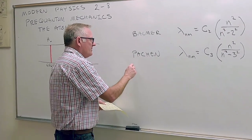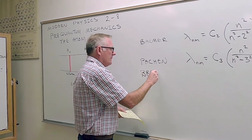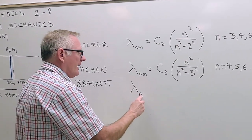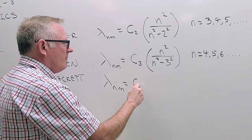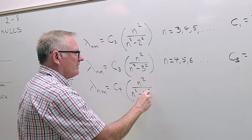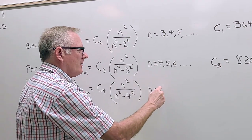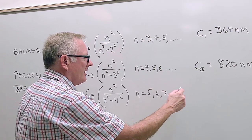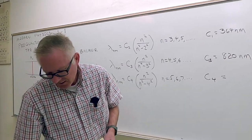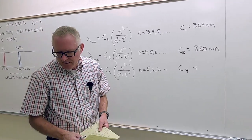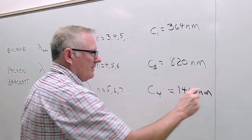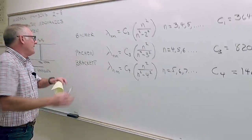Then there was Brackett, who found another series. His formula is: wavelength in nanometers equals C4 times n² over (n² − 4²), where n starts at 5, 6, 7, and so on. C4 equals 1460 nanometers — also in the infrared, even further down.